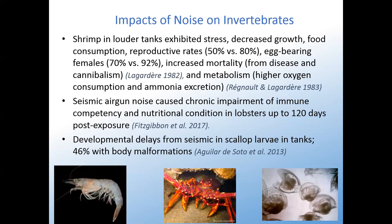For invertebrates in a tank study, shrimp in louder tanks exhibited stress, decreased growth, decreased food consumption, and lower reproductive rates — 50% versus 80% in quiet tanks. Egg-bearing females went down to 70% from 92% in quiet tanks. Mortality increased from disease and cannibalism, and metabolism was higher with greater oxygen consumption and ammonia excretion. Seismic area noise caused chronic impairment of immune competency and nutritional condition in lobsters, and interestingly this occurred even four months after the seismic survey ended.